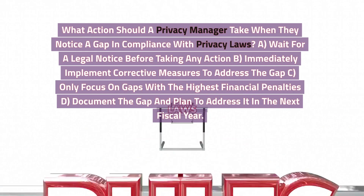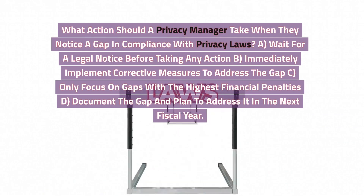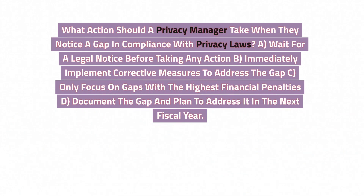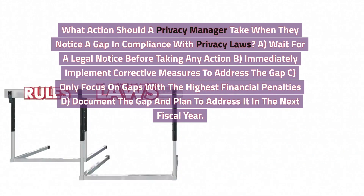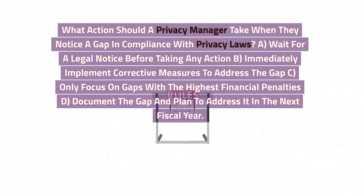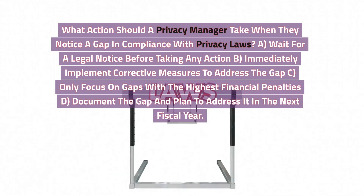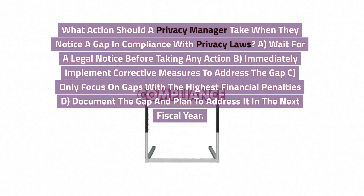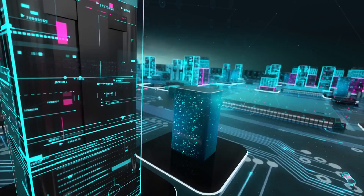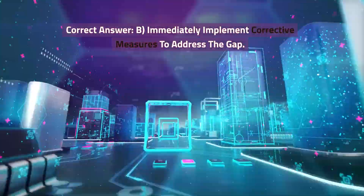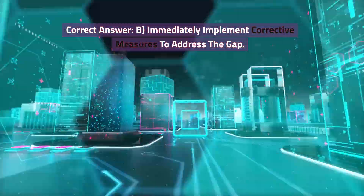What action should a privacy manager take when they notice a gap in compliance with privacy laws? A. Wait for a legal notice before taking any action. B. Immediately implement corrective measures to address the gap. C. Only focus on gaps with the highest financial penalties. D. Document the gap and plan to address it in the next fiscal year. Correct answer: B. Immediately implement corrective measures to address the gap.